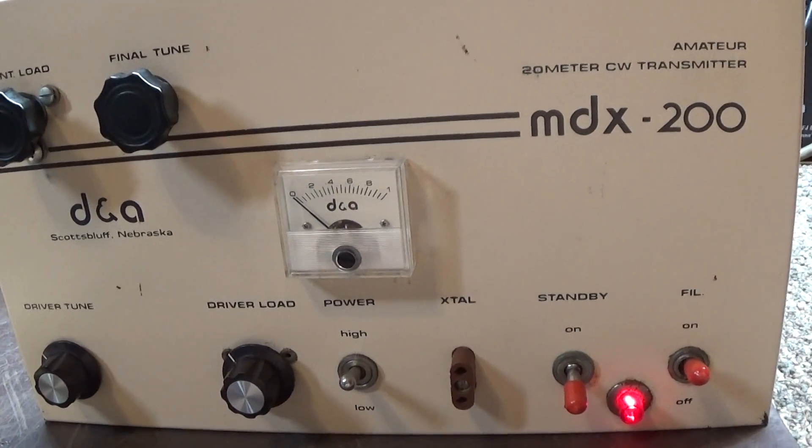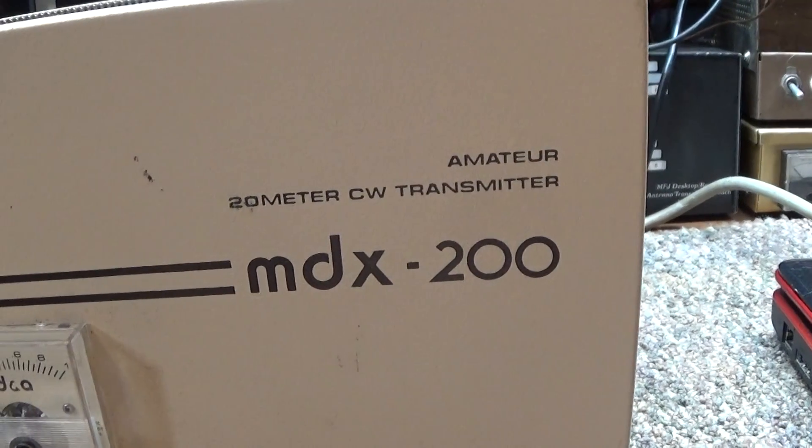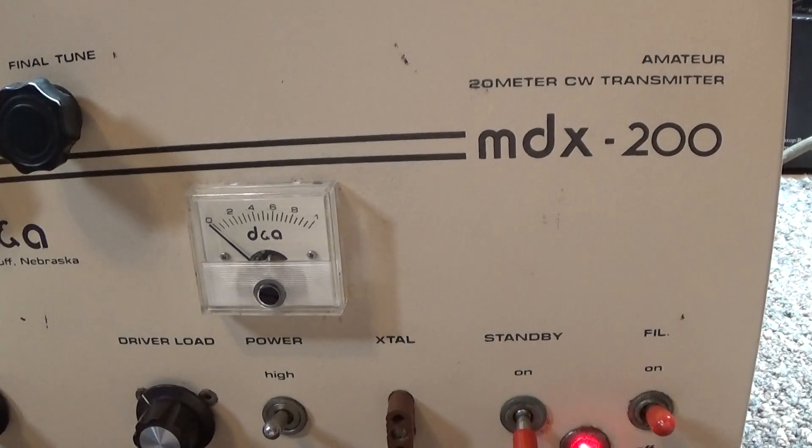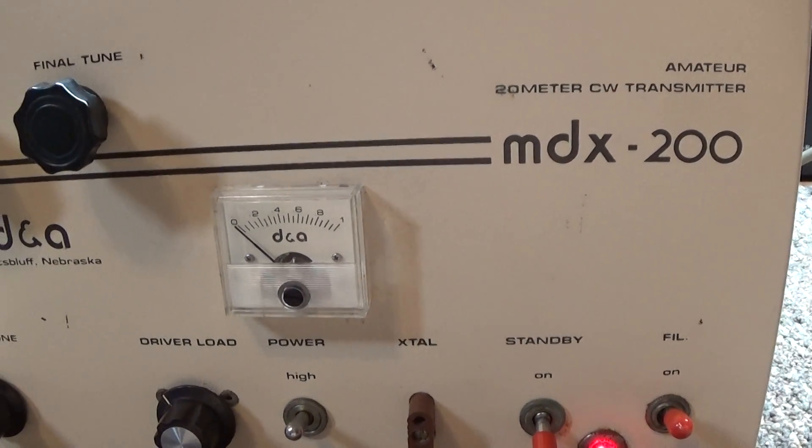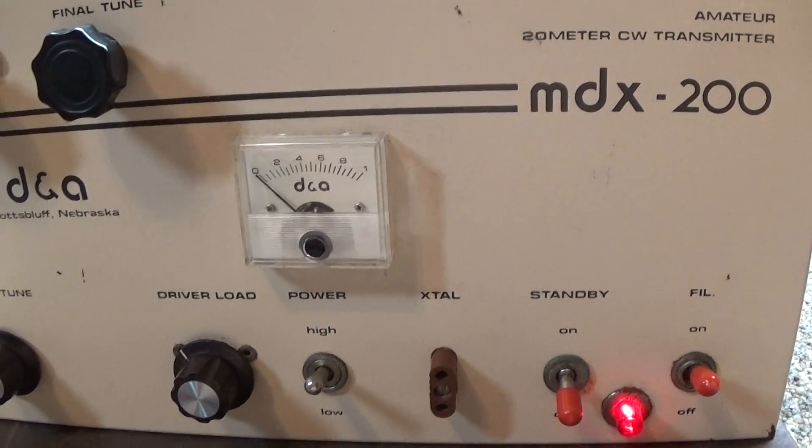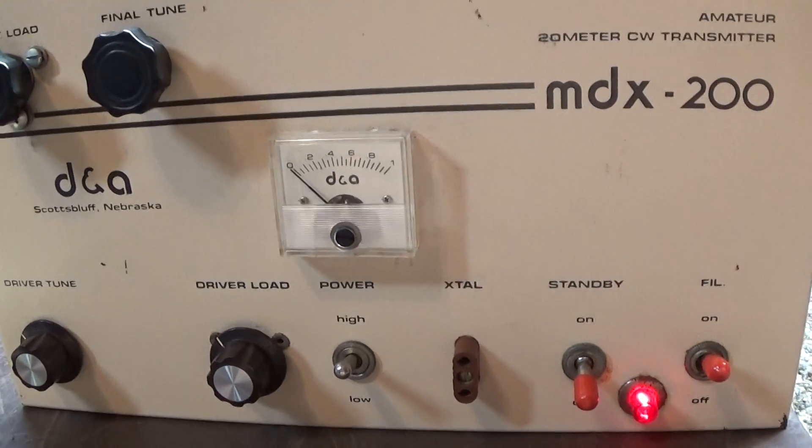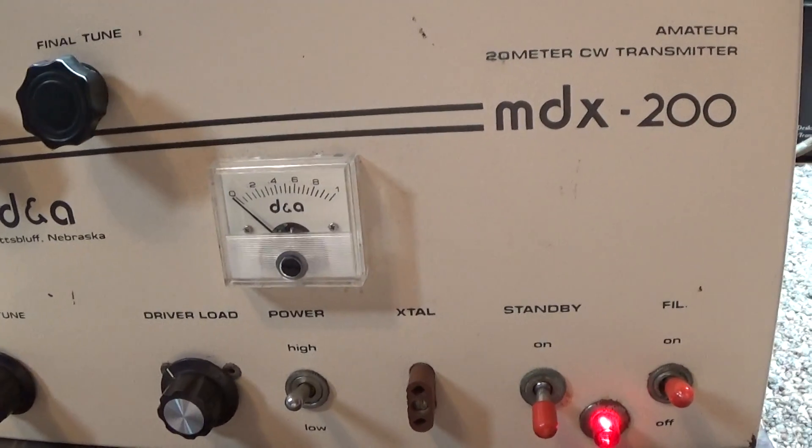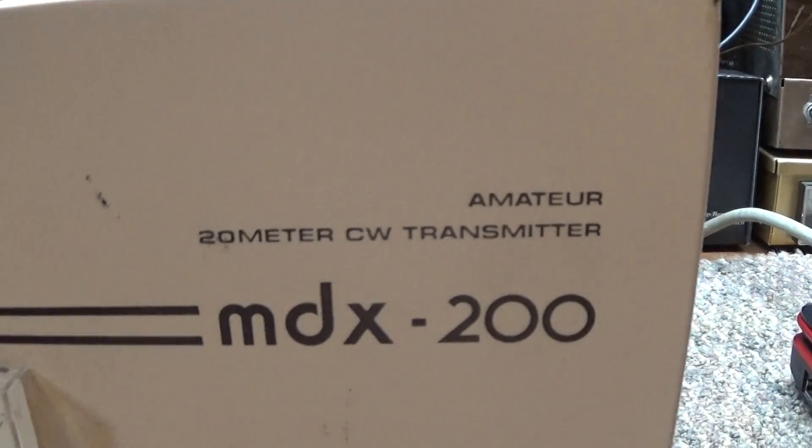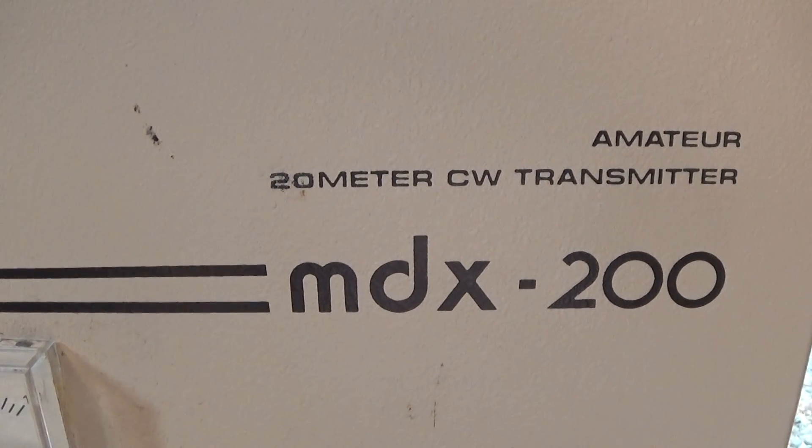Okay, today going to do a quick video on a DNA MDX 200 amplifier. The MDX 200 is the later or newer version of the old Maverick 250 amplifier. This version was modified some to get past the FCC back in the 70s and 80s when the FCC cracked down. They marketed this amplifier as a transmitter, you see where it says 20 meter CW transmitter instead of an amplifier.